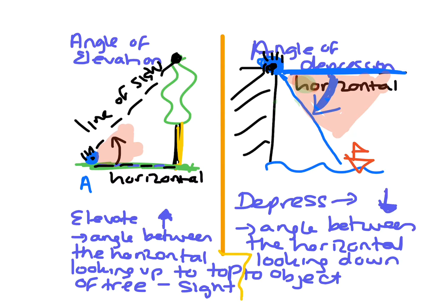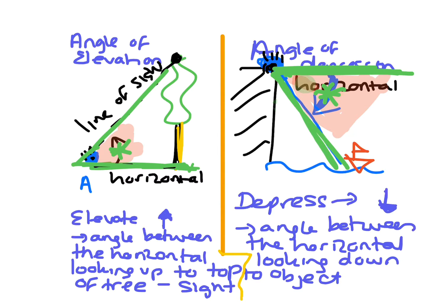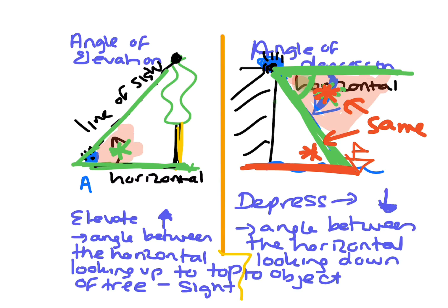Something special about the angle of depression: there's the angle of depression, and this is the angle of elevation. If you extend the line of sight, it actually forms a Z shape. And this angle — the angle of depression — will equal this angle of elevation. So they have the same angle. The angle of depression from the top of a cliff looking down to the boat equals the angle of elevation from the boat looking back up.